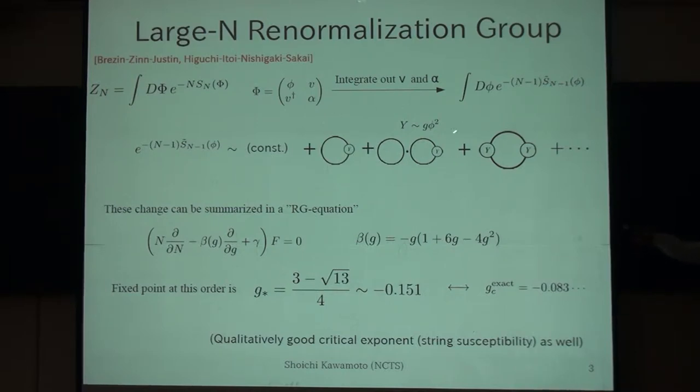Since from this correction, the value of the coupling constant is shifted, this shift can be summarized into this RG type equation in the large N limit. Then you have to define some beta function, and then you can look for some fixed points of the beta function. And in this model, this fixed point is given by this way.